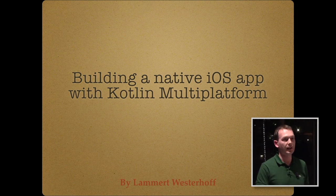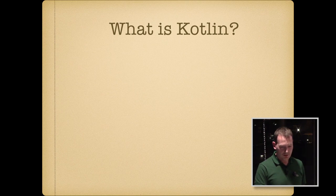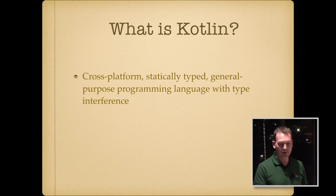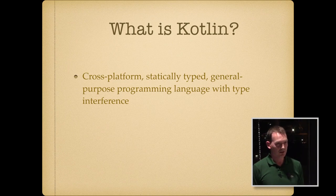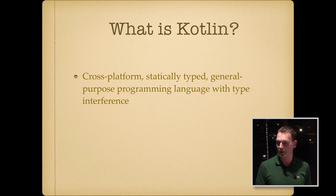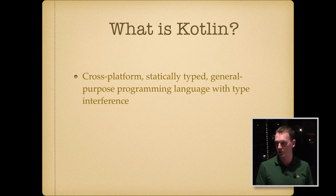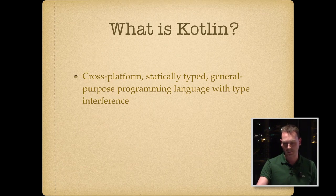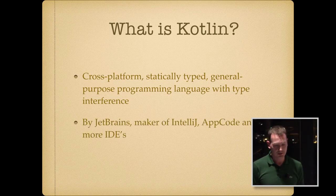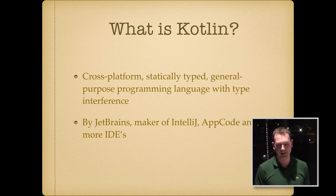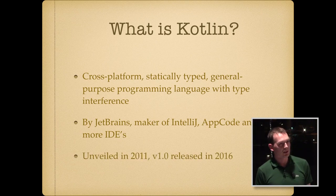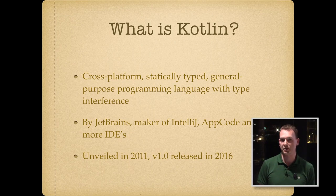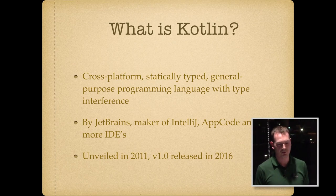First, a quick introduction to Kotlin. So what is Kotlin? It's a cross-platform, statically typed, general purpose programming language with type inference. You can also say that about Swift, and it's actually very similar to Swift. That makes it easy for iOS developers — and I assume all of you write Swift — so that should make it easy to write some Kotlin code as well. It's made by JetBrains, which most people know as the maker of IntelliJ and AppCode and their whole range of IDEs. They unveiled it in 2011, so even before Swift.